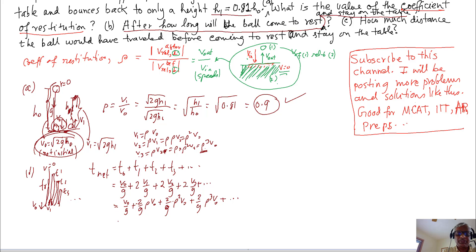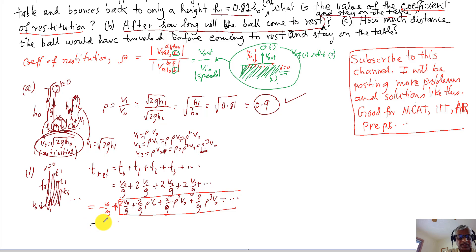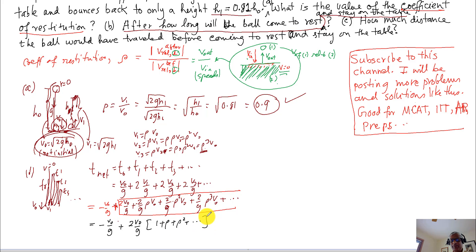I'll use a little trick: write this as –V0/g + (2V0/g)·(1 + ρ + ρ² + ρ³ + ...). The series in parentheses is a geometric series, whose sum is 1/(1 – ρ). So the total time becomes –V0/g + 2V0/g · 1/(1 – ρ).